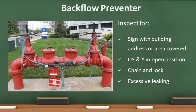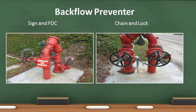Backflow preventers are equipped with fire department connections, also known as FDCs. The caps shall be in place. Remove the caps and ensure the gasket is inside. Turn the swivel and ensure it moves freely. All parts should be clean and free of corrosion and debris. Be sure to replace the caps after inspecting. The backflow preventer shall have a sign stating which addresses it serves. Note the caps are on the FDC, the chain and lock are in place, and there is no evidence of leaking or corrosion.